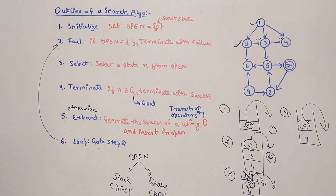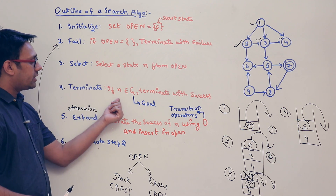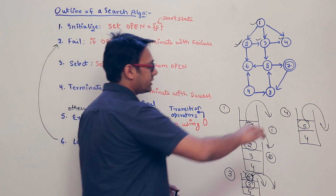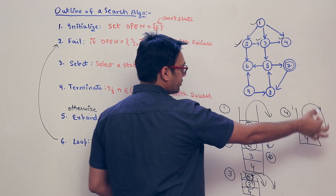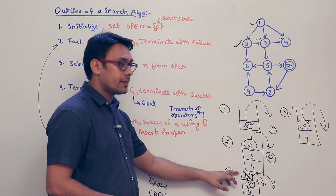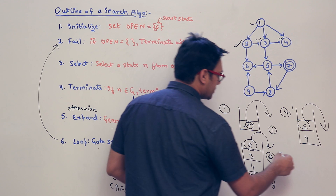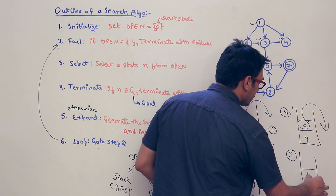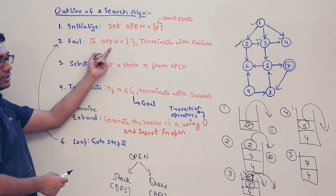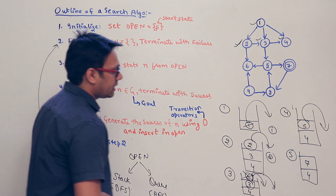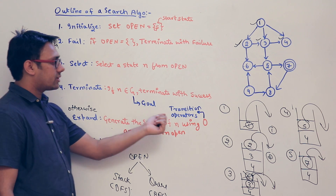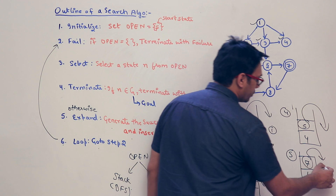After taking 5 out of the stack, we check: is 5 a goal state? No. So we expand and generate the successors of 5. The successors of 5 are 6 and 7. Since 6 has already been visited, we take 7 and put it in the stack. The stack now contains 4 and 7. We go to step 2 — open is not empty — so we select 7 from the stack. We check: is 7 a goal state? Yes — 7 is the goal state. We have reached the goal.